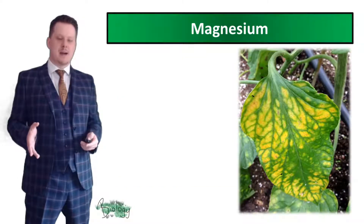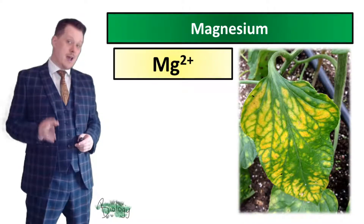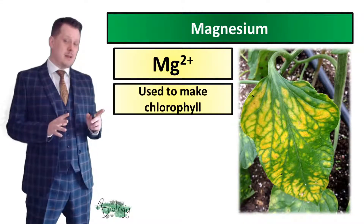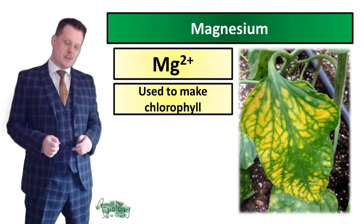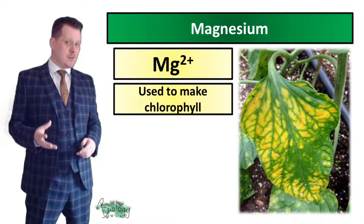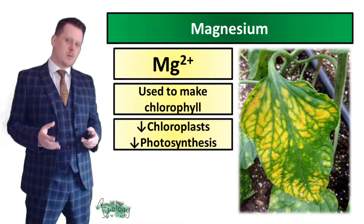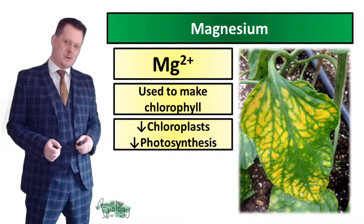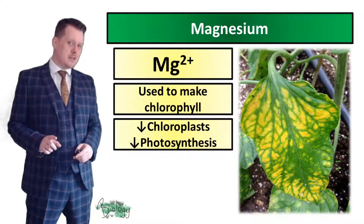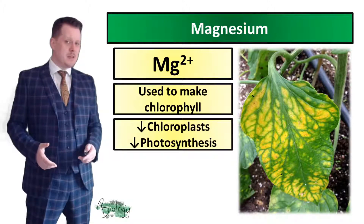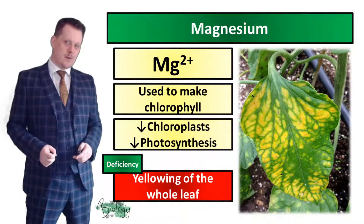Starting off with magnesium. Its ion is Mg2+. The function of magnesium is to make chlorophyll, the green pigment contained within the chloroplasts. If there isn't enough magnesium you can't make chlorophyll, so the number of chloroplasts goes down and the rate of photosynthesis goes down. And because magnesium is responsible for making this green pigment, when there is a deficiency the whole leaf will turn yellow.